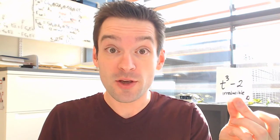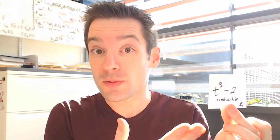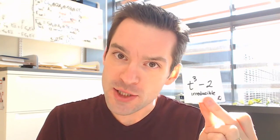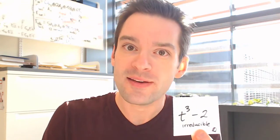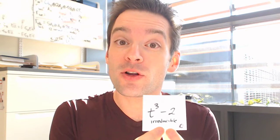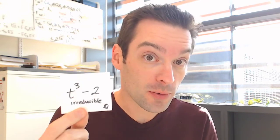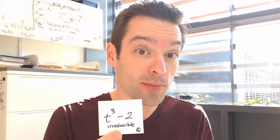We're trying to understand how the splitting field of a polynomial can give us a measurement of just how difficult it is to locate the roots of that polynomial. For example, we've already taken a look at the polynomial t cubed minus 2, which is irreducible over the rationals, and asked the question: what do we need to add to the rationals in order to locate all three of the roots of this cubic polynomial?